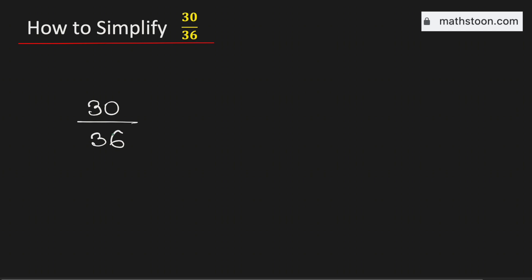See that 2 divides both the numbers. If we divide 30 by 2 we get 15, and if we divide 36 by 2 we get 18. Therefore it is equivalent to 15 over 18.